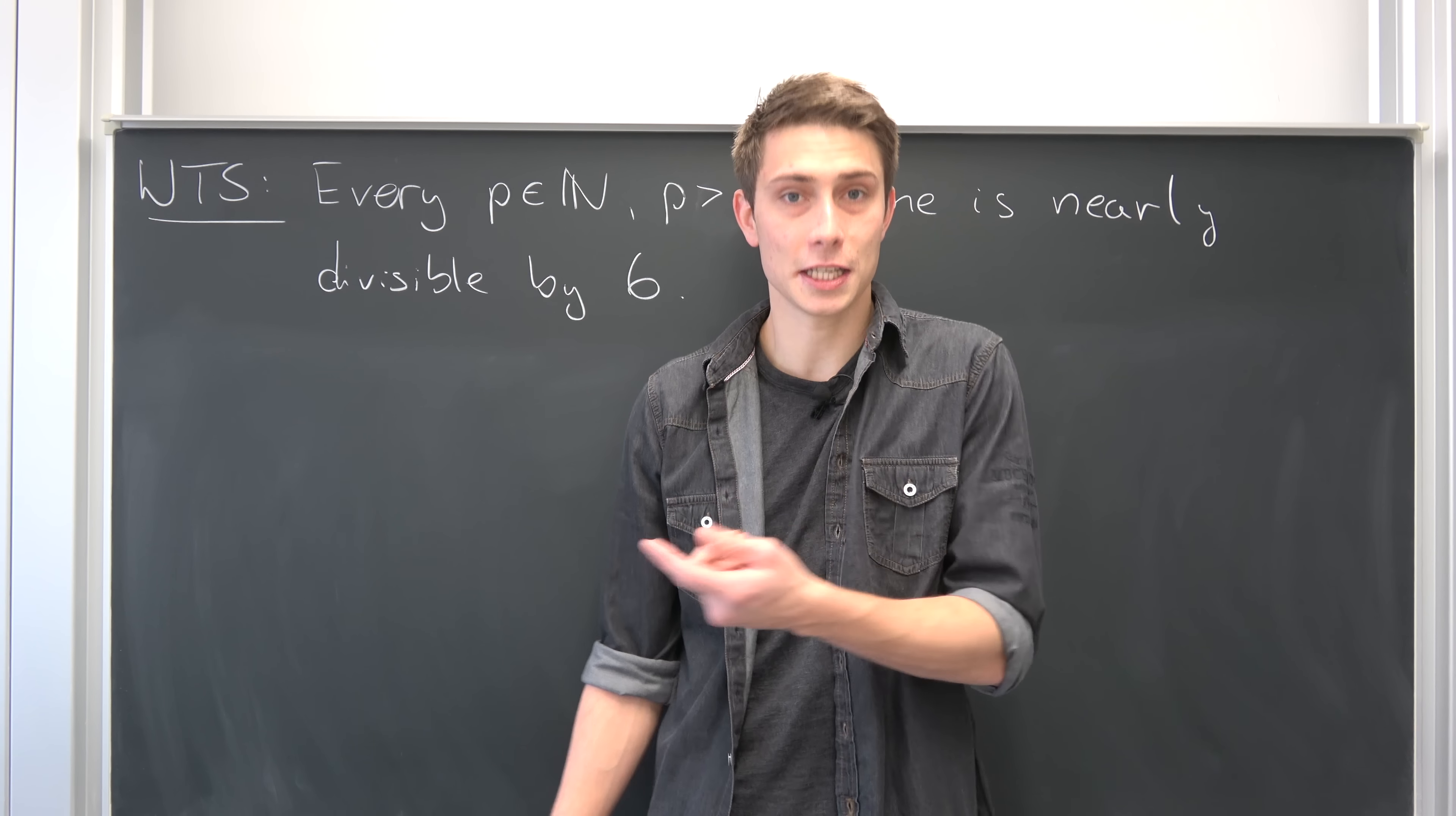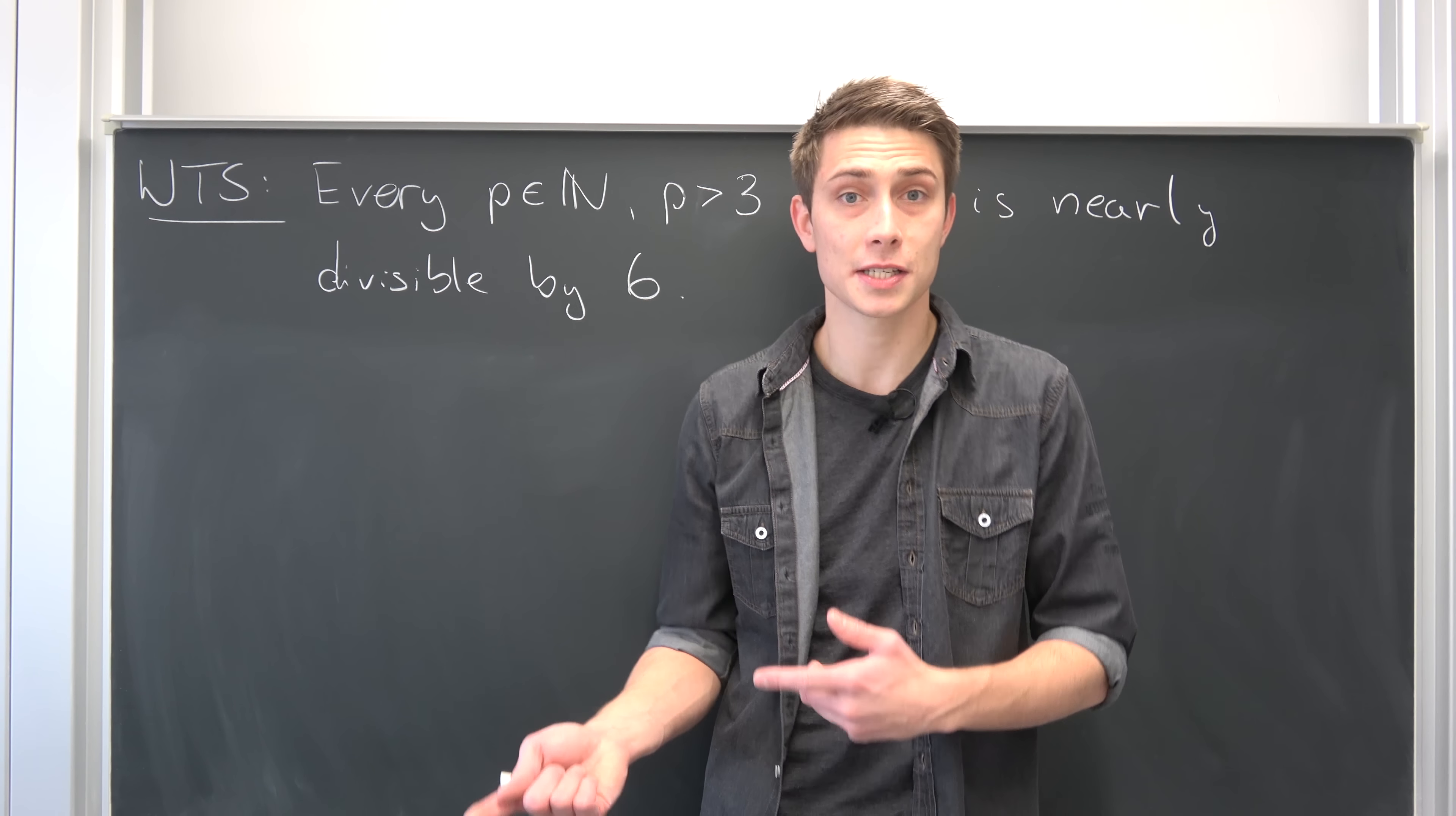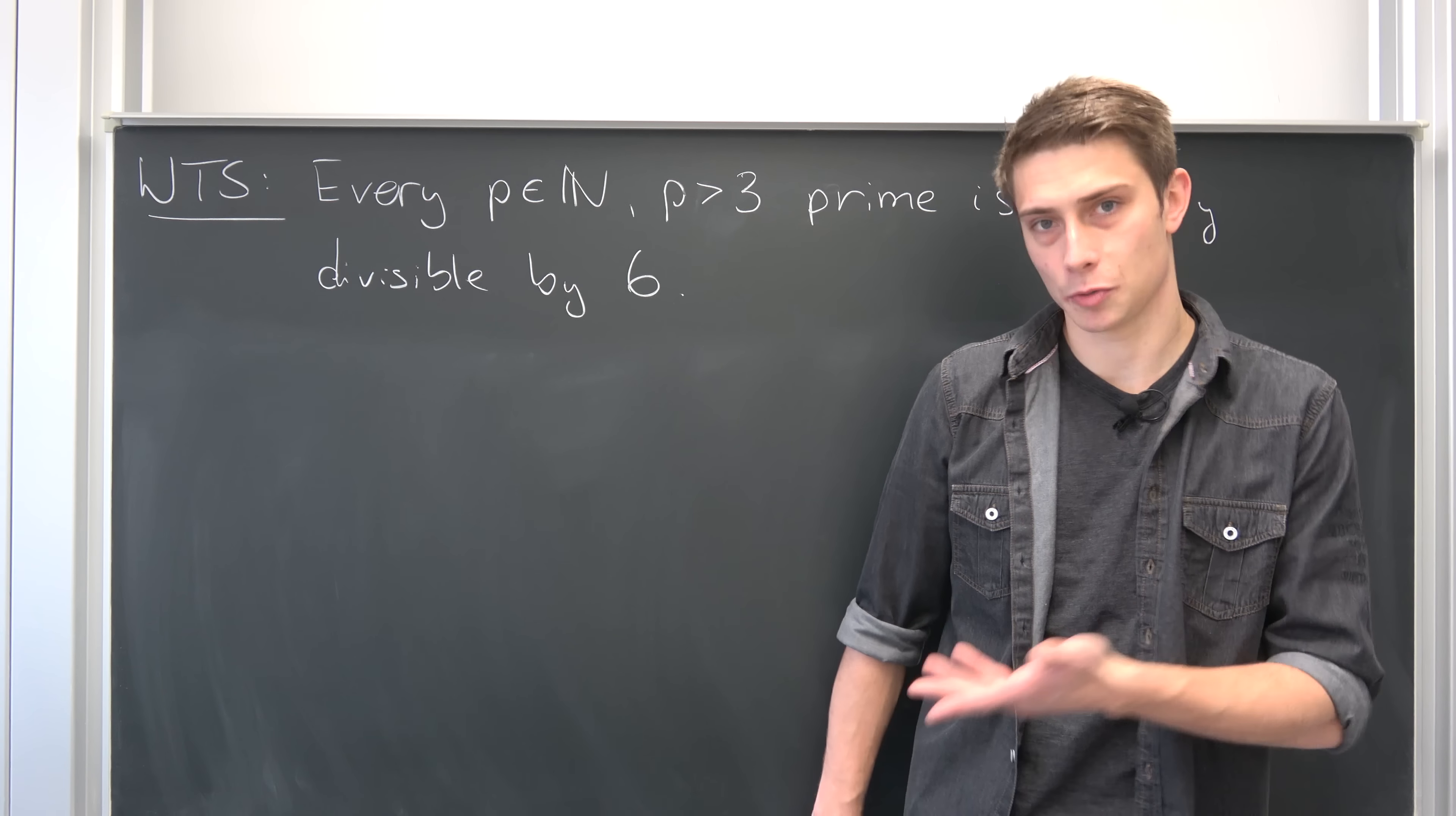For example, 7 is 6 plus 1, so this prime number 7 is 1 more than a multiple of 6, or prime numbers can be 1 less than a multiple of 6. How can we write this in mathematical terms to prove this?